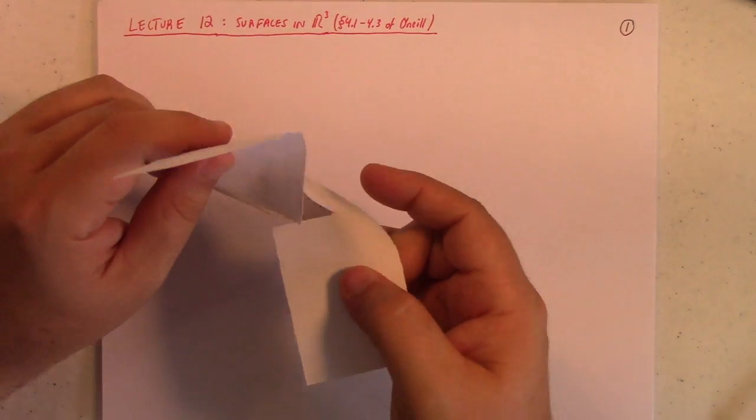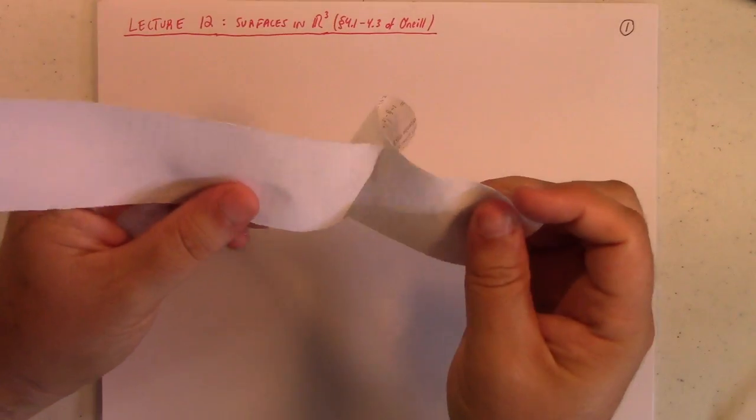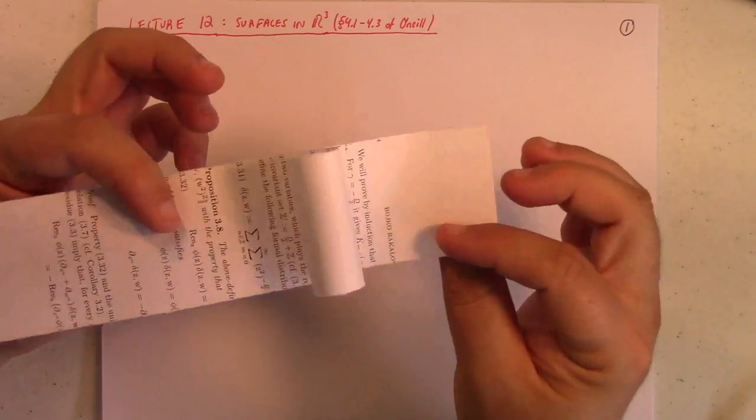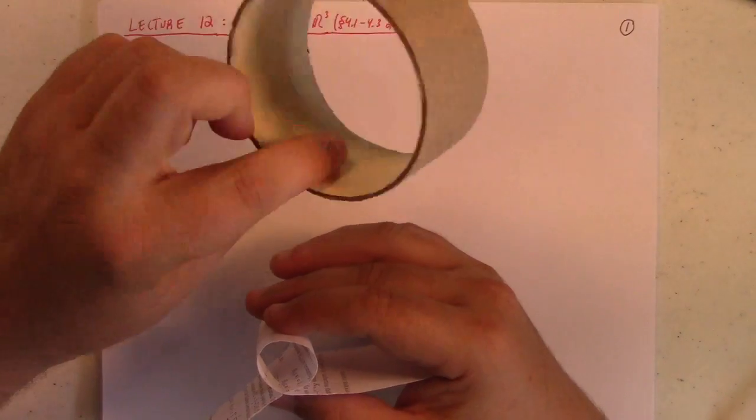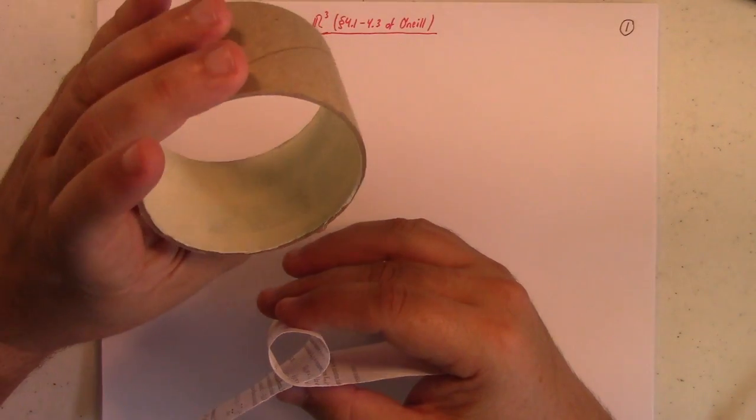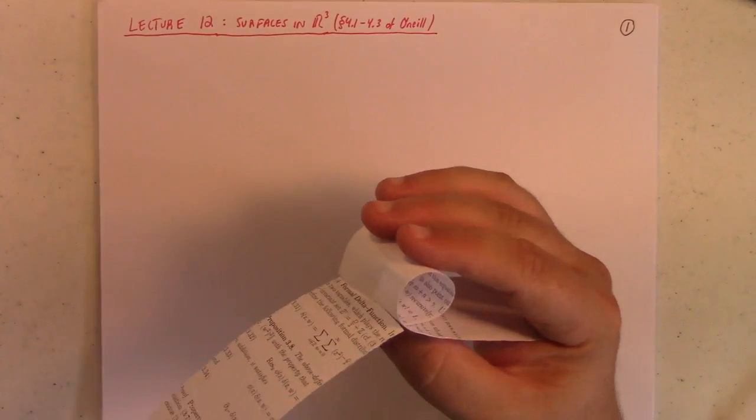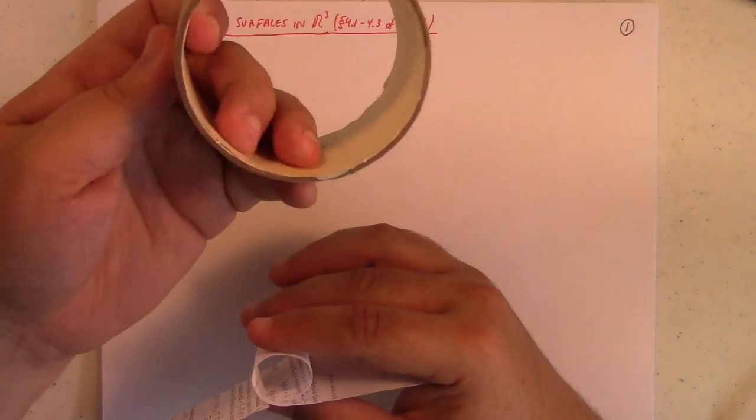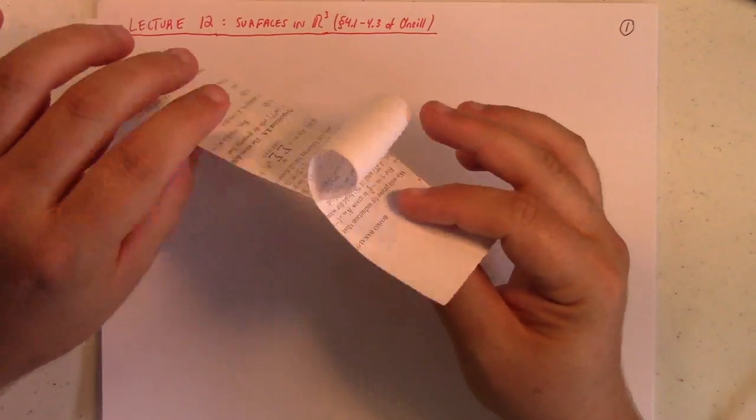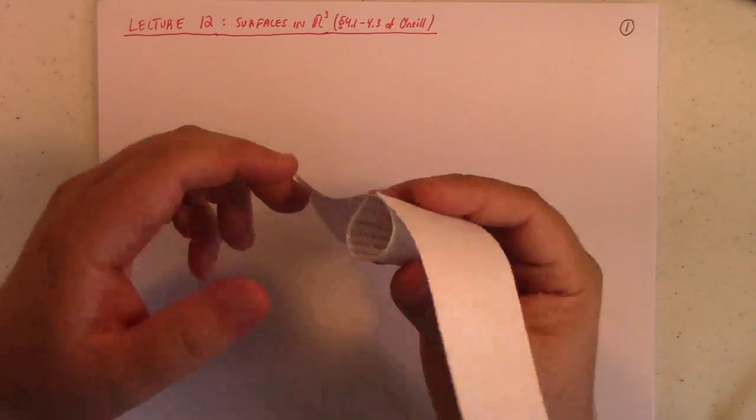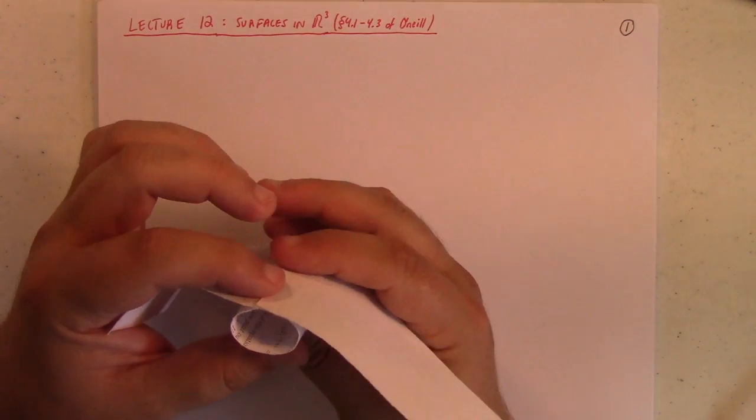But the one thing we don't want to allow is something like this. Our surfaces won't have self-intersection. Like this, this is not allowed. Well, I mean, that's not entirely true. They can have self-intersection, like this kind of has a lot of self-intersections, doesn't it, in some sense or another? But more to the point, locally, this doesn't look like a plane at that intersection point, that crease point, right?